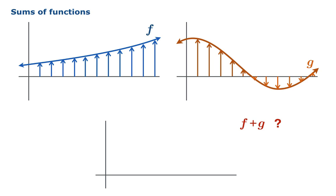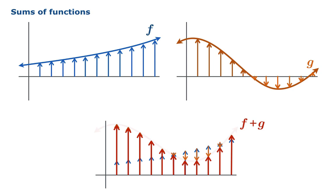Arrows pointing down correspond to negative numbers. And when you want to graph the sum, you take the instructions from one of these functions, and the instructions from the other function, and you add them together. And the net result tells you where the points of the graph of f plus g lie. And we might call this idea graphical addition.